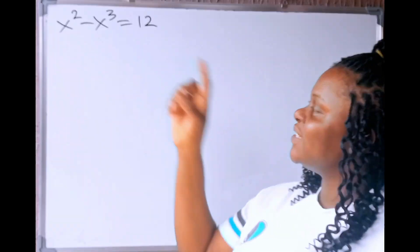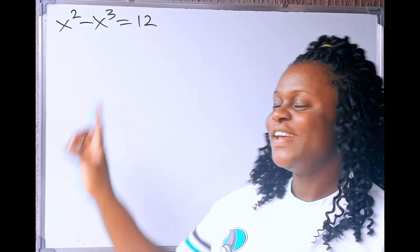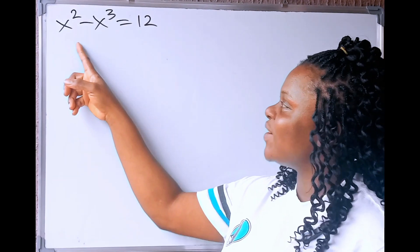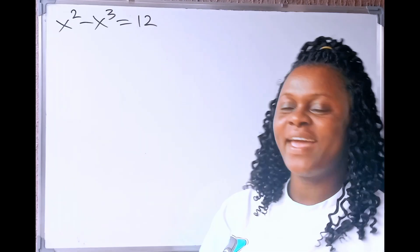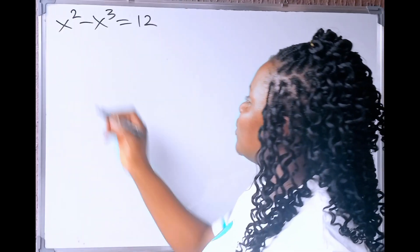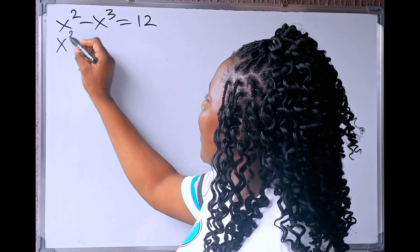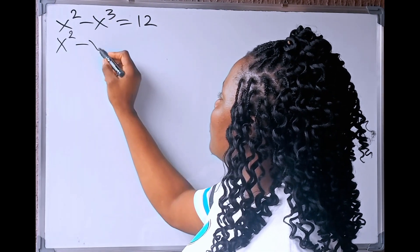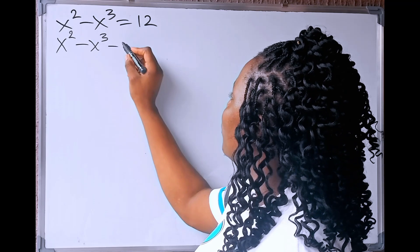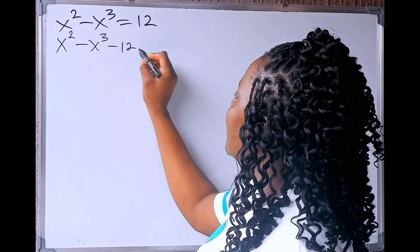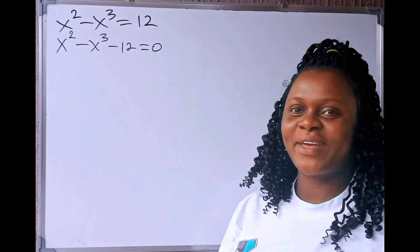Now, for us to solve this, the first step we are going to take is to equate all these terms towards zero. Now, if we do that, we are going to have that x squared minus x cubed minus 12 is equals to zero.